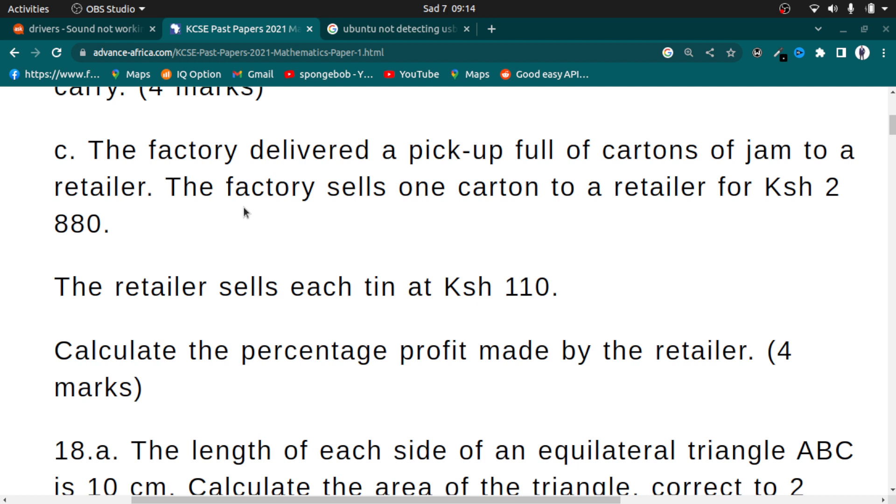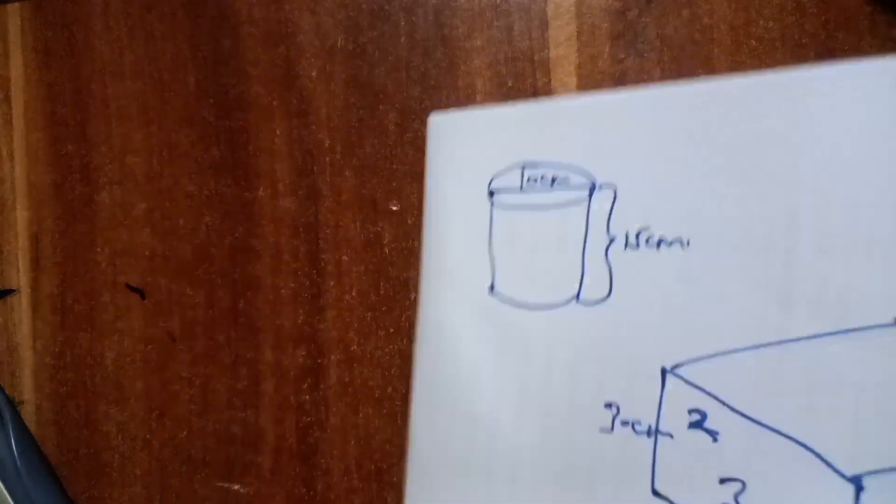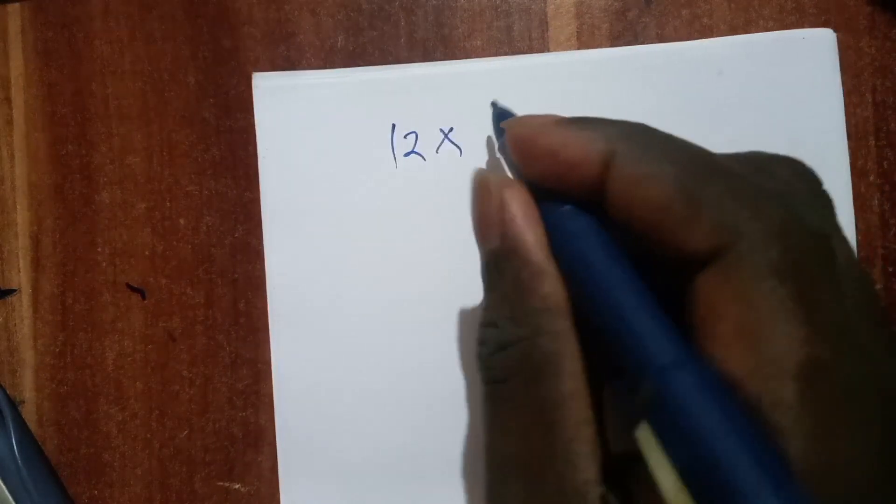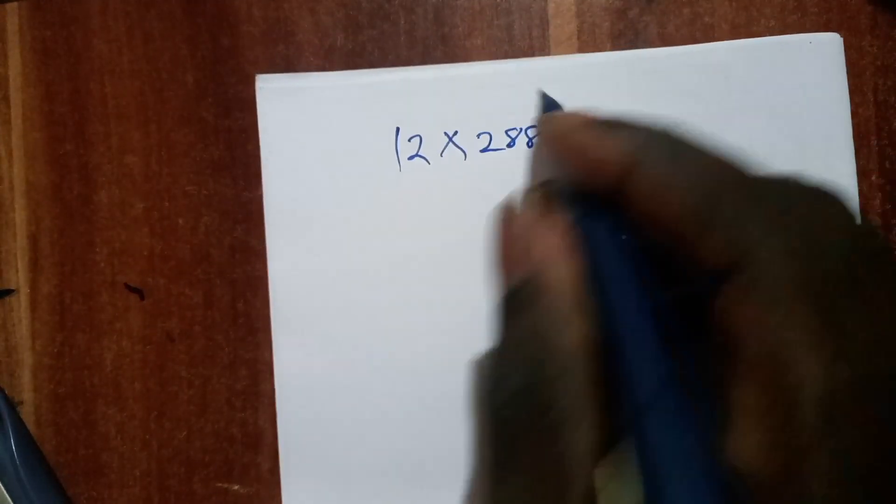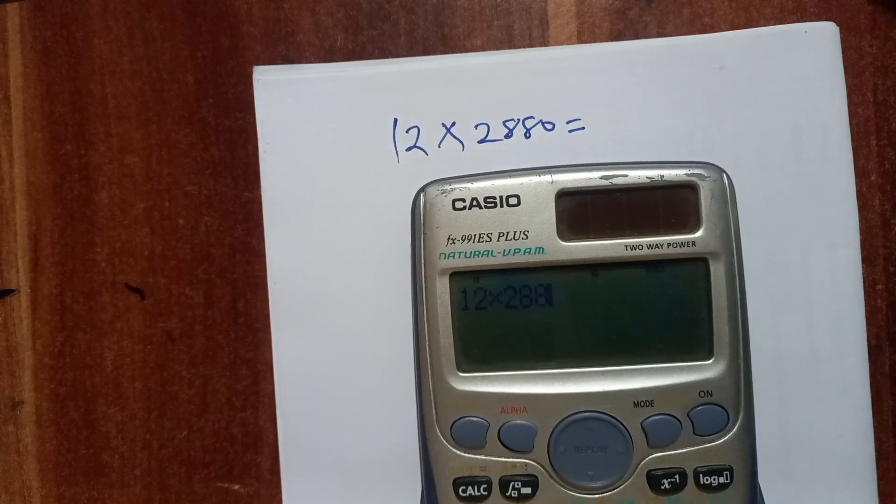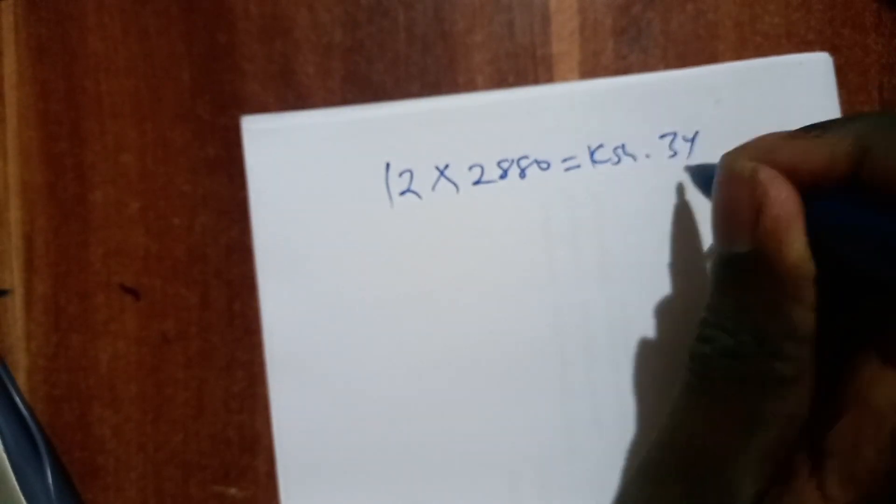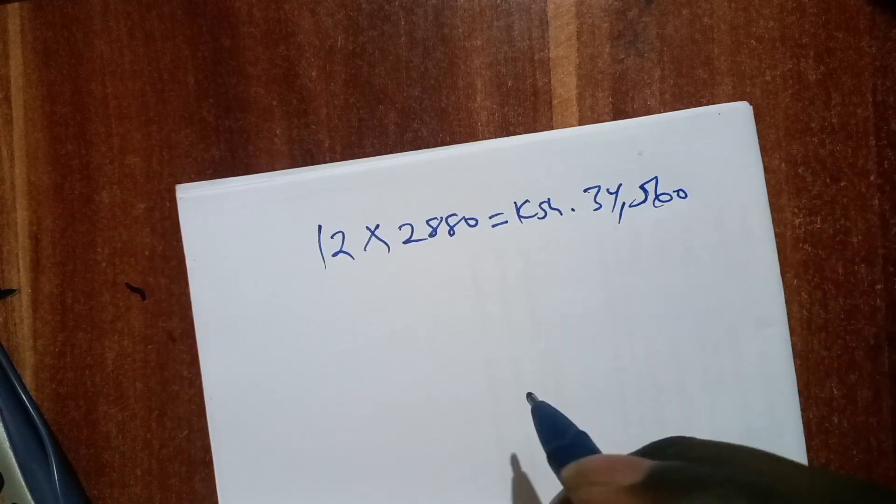So we need to know, first of all, how much did the retailer spend? We have 12 boxes or 12 cartons. Each carton costs 2,880. So we have 12 boxes for each pickup. The 12 boxes, we multiply by the price of one box, which is 2,880. 12 multiplied by 2,880 is 34,560 Kenya shillings.